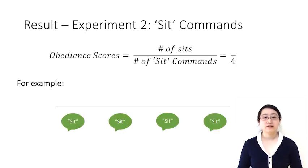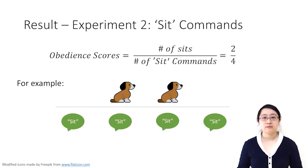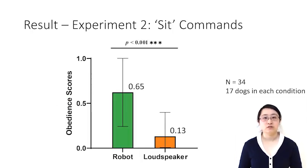For example, if the dogs were given 4 sit commands, and they sit 2 times, then the obedience score is 0.5. So the obedience score is a number between 0 and 1. The higher it is, the more often that the dog follows the sit commands.